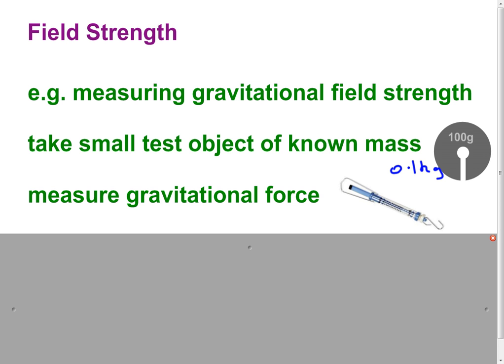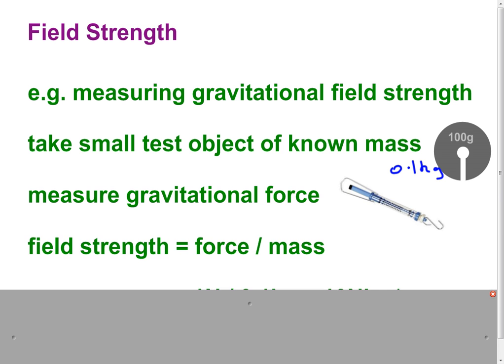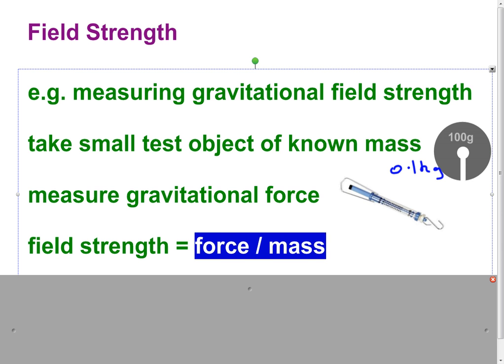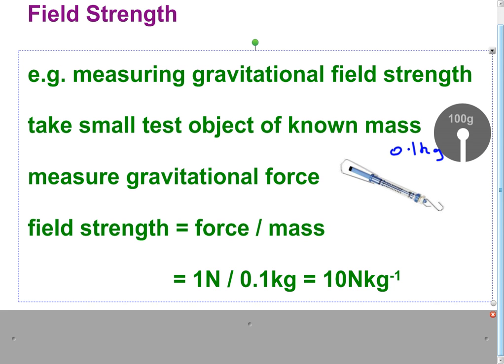We could then measure the gravitational force acting on that mass by using a force meter. And if we hung the mass from the force meter, we would measure that force. Now, the field strength is the force divided by the mass, the force per unit mass.